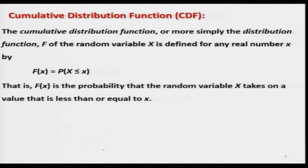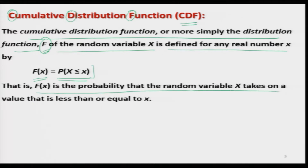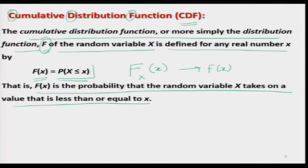Now let us formally define the cumulative distribution function, briefly called as CDF — C is from cumulative, D is from distribution, and F is from function. The cumulative distribution function, or more simply the distribution function, capital F of the random variable capital X, is defined for any real number small x by: capital F(x) = P(X ≤ x). Capital F is the standard notation for indicating the CDF. This can also be written with the random variable in the subscript and the value x inside parenthesis, but for simplicity we will just use F(x).